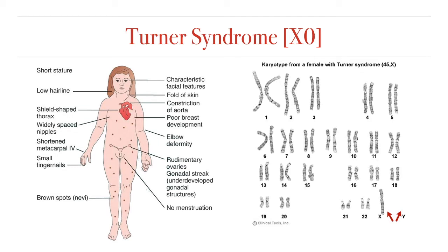Signs and symptoms vary among those affected with Turner Syndrome. Often, a short and webbed neck, low-set ears, a low hairline at the back of the neck, short stature, heart defects, and other physical features are common. Typically, they fail to develop menstrual periods and breasts, but can do so with hormone treatment. They are also unable to have children without the help of reproductive technology.